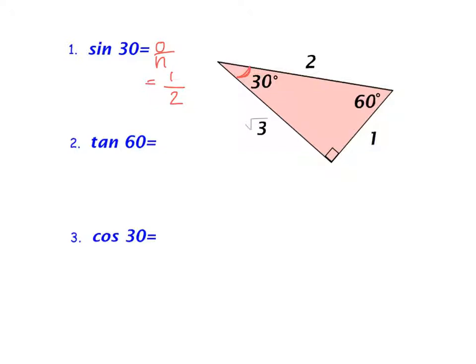Let's look at the tangent of 60. So my reference angle changes. Now I'm down here at 60 degrees. Tangent is opposite over adjacent. So the opposite side of 60 is the square root of 3 over the adjacent side, which is 1.